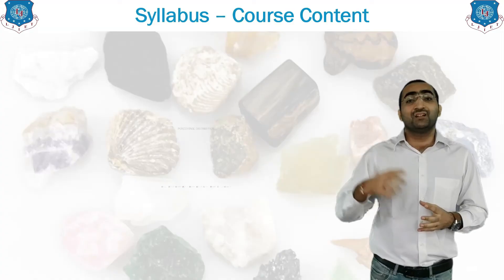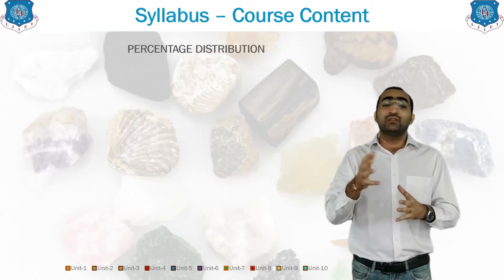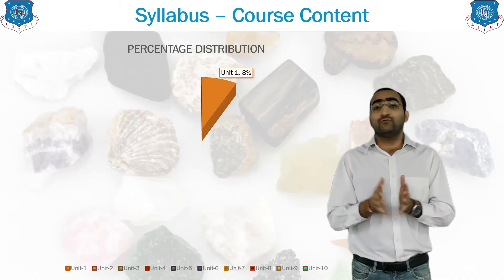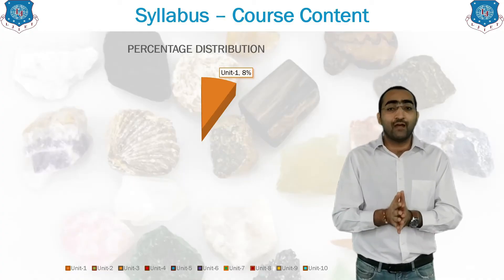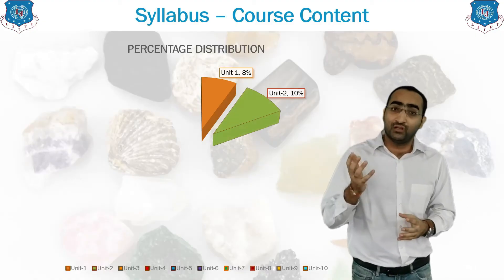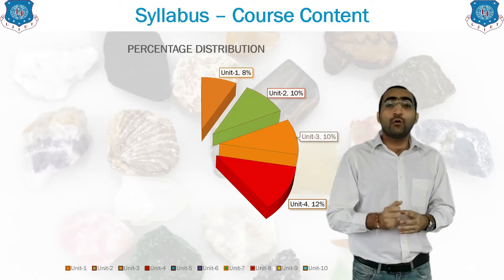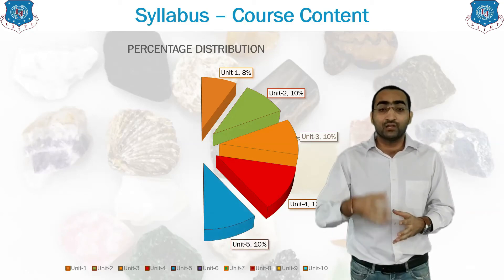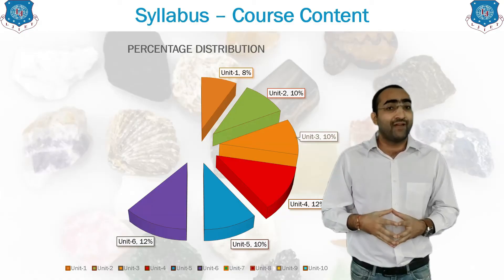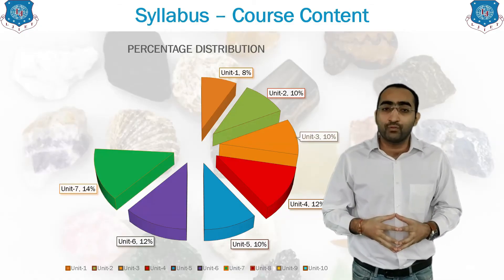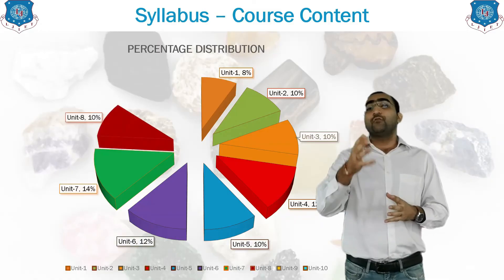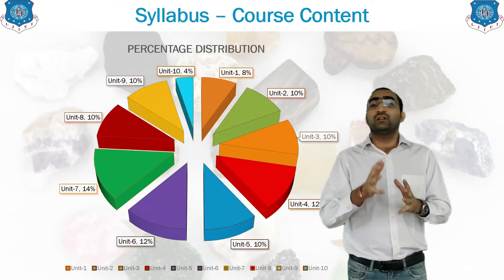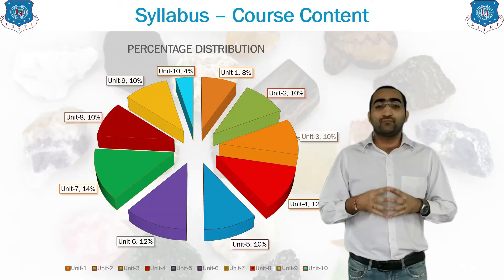Now let us see the percentage distribution in the GTU syllabus. Unit number 1 is about 8%. Most units include about 10% on average — unit 2 is 10%, unit 3 is 10%, unit 4 on solidification and theory of alloy is about 12%, unit 5 is 10%, the allotropy of iron is about 12%, and heat treatment of steel is 14%. Powder metallurgy and NDT are 10% each, and lastly corrosion is 4%. In this way, approximately 10% has been distributed overall to the MSM subject syllabus.